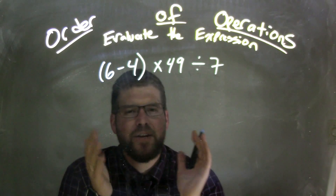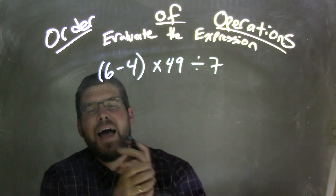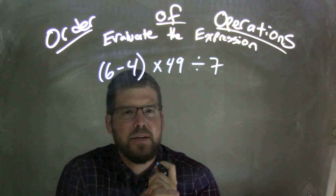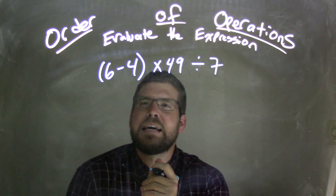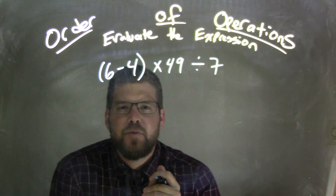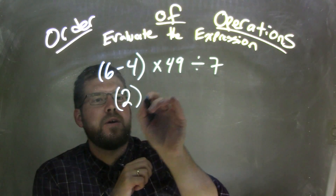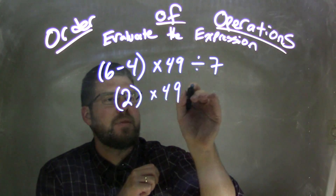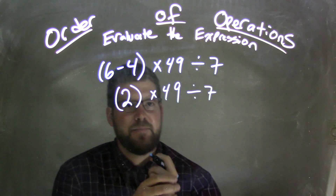We have to think, what do we need to do first? Well, we have the parentheses first. That's what needs to be done, because parentheses always comes first. So inside the parentheses, we have 6 minus 4, so now we have 2. 6 minus 4 is 2, times 49, divided by 7.